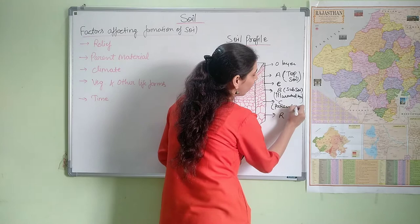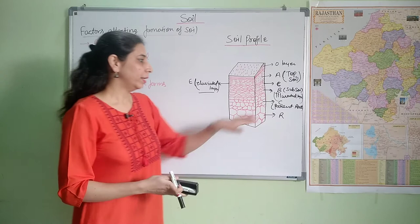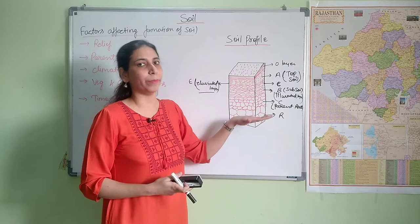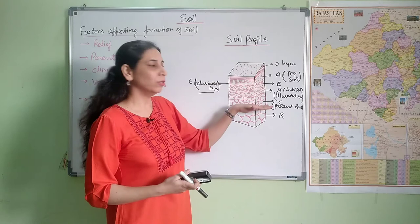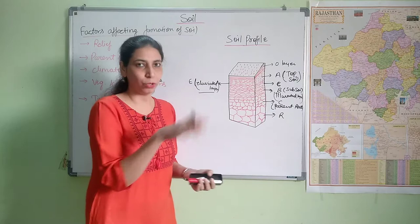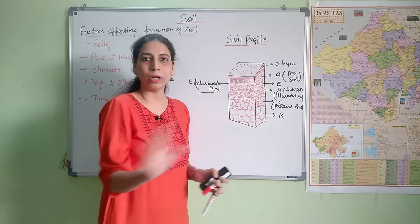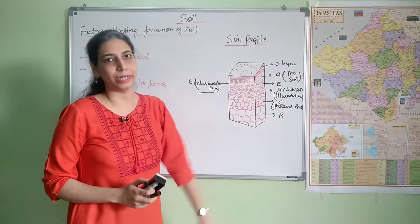After that comes the C layer, which is the parent rock material. This is the first layer to form in the formation of soil — C layer forms first, and then the upper layers develop on top of it. The R layer at the bottom is the bedrock and is not part of functional soil. So the O layer and R layer are not part of functional soil. Mainly, the three functional layers are A, B, and C. I hope the soil profile is clear.